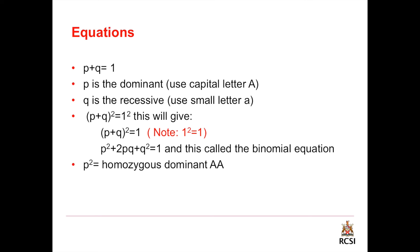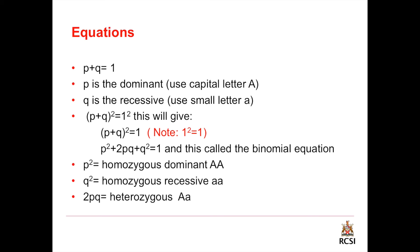p squared is equal to homozygous dominant and we refer to it by double capital letters, for example double capital A. q squared is the homozygous recessive and we refer to it by double small letter, for example double small a. 2pq is the heterozygous — one capital letter and one small letter.